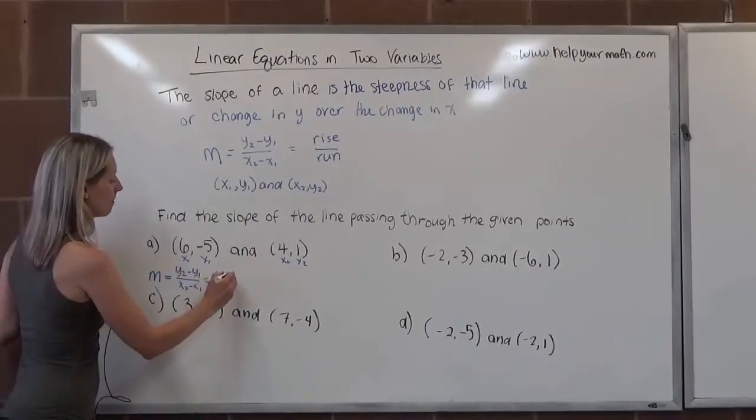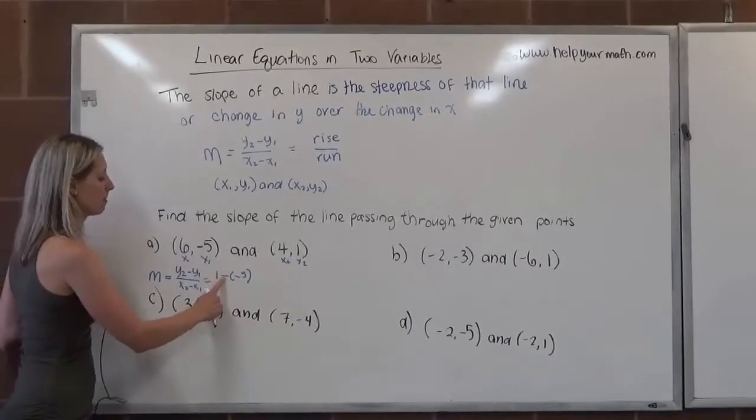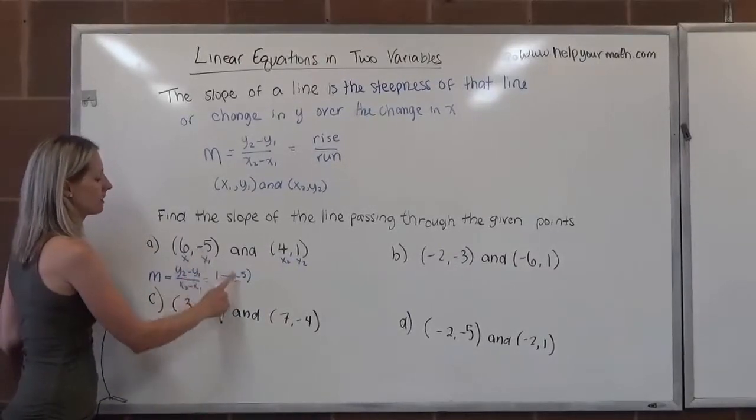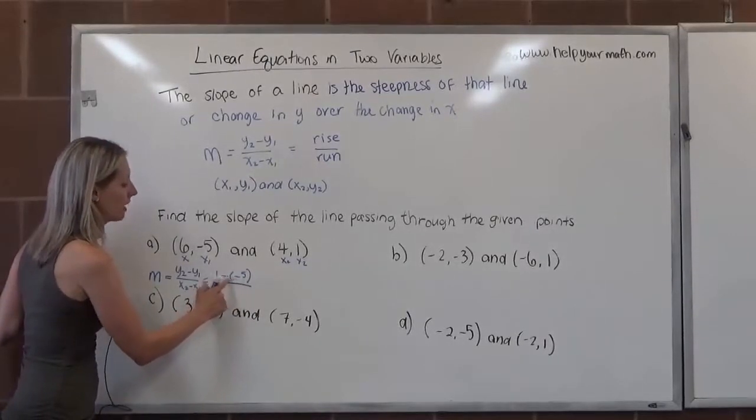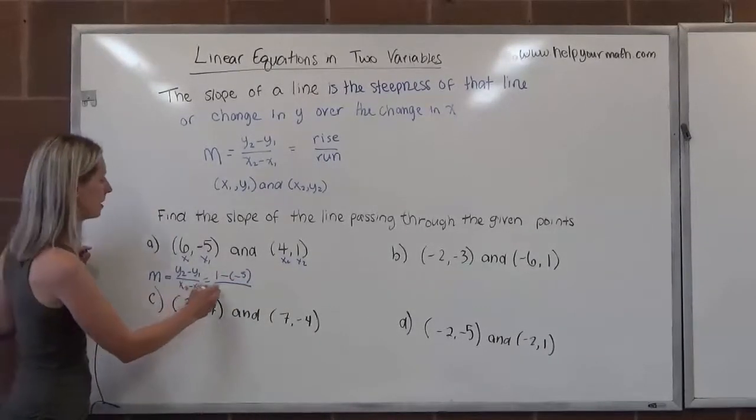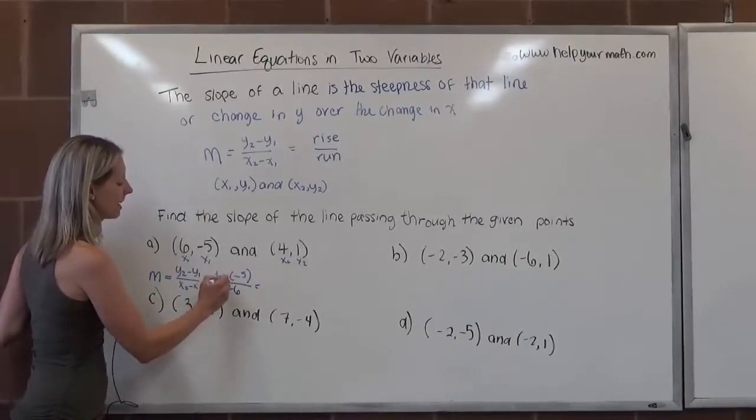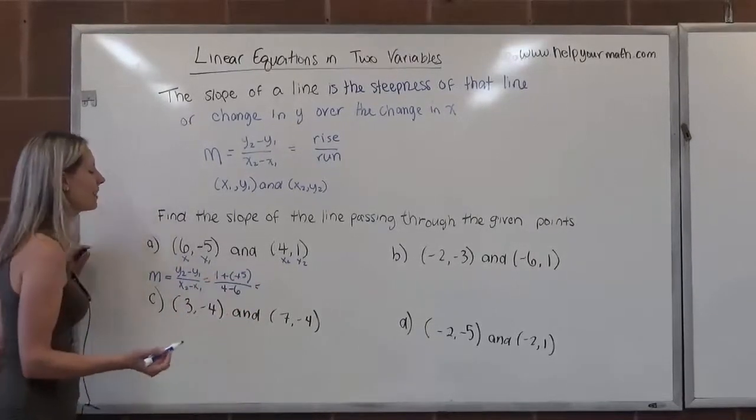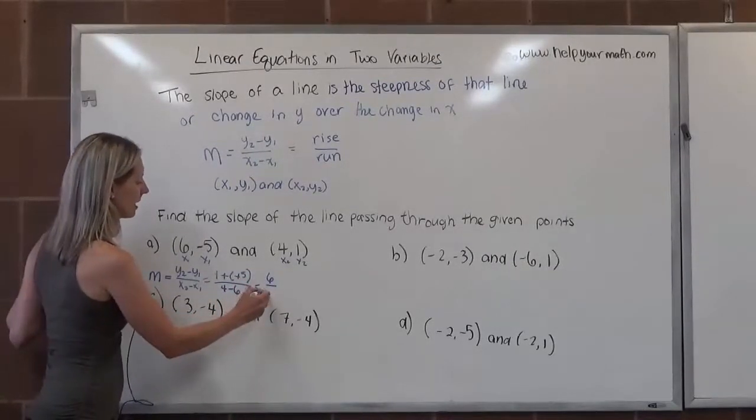y2 is 1, 1 minus negative 5. Be careful with those negatives there. That minus is in the formula. That negative is part of that particular coordinate. So there are two negatives in the numerator. In the denominator, we have 4 minus 6. 1 minus negative 5, we can rewrite that as 1 plus 5, which is 6. 4 minus 6 is negative 2.